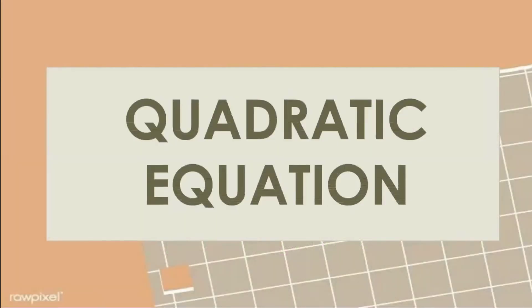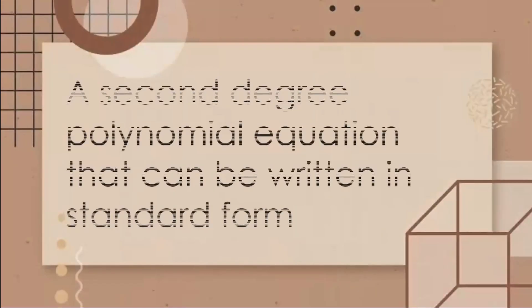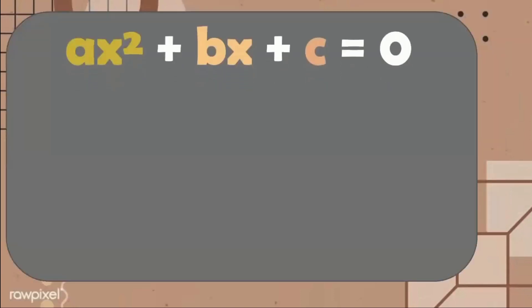So, what is a quadratic equation? A quadratic equation is a second-degree polynomial equation that can be written in standard form Ax² + Bx + C = 0.